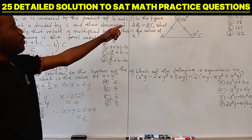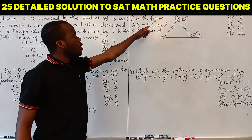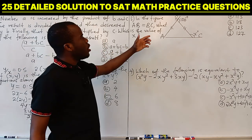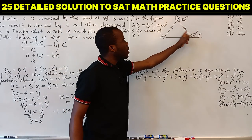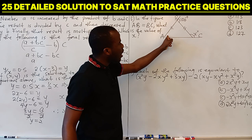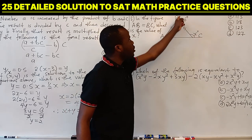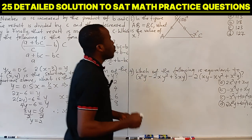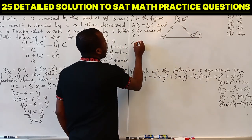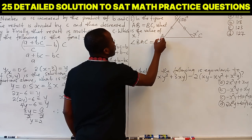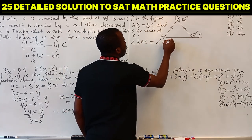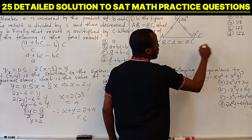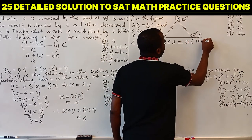Question 3 says: in the figure, line AB equals BC. What is the value of X? Since AB equals BC, the base angles of the isosceles triangle — angle BAC and angle BCA — must be equal. Let's call each of them A. The reason is: base angles of an isosceles triangle are equal.